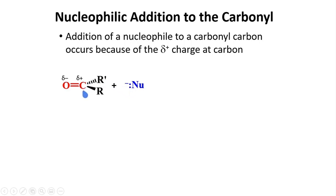Because of its sp2 hybridization, the central carbon has a trigonal planar arrangement. Thus, a nucleophile may attack at the top or at the bottom in a one-to-one probability.